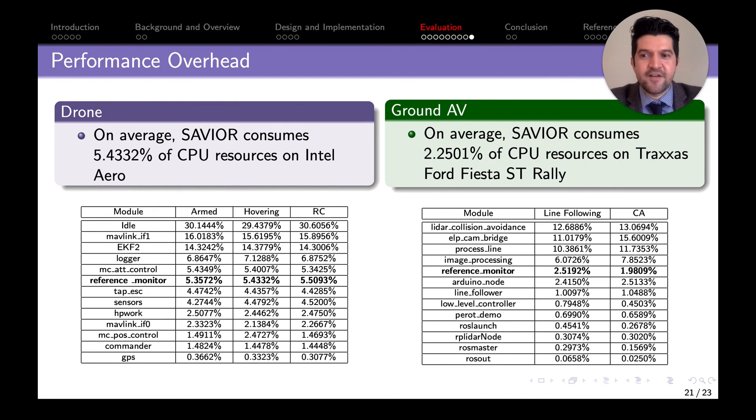When it comes to overhead of our system, the drone has an average overhead of 5.4% and on the ground vehicle, an average overhead of 2.5% CPU utilization.